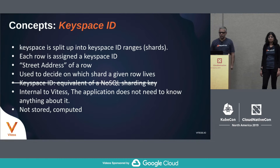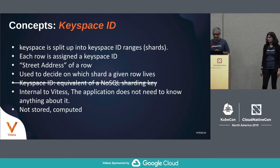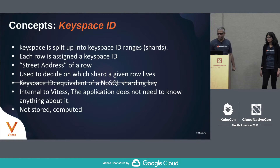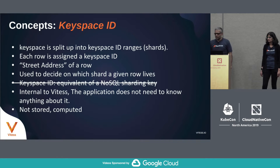A keyspace ID is what key-value stores typically use for sharding, but in Vitesse we never actually store a keyspace ID for every row. A keyspace is split up into keyspace ID ranges, which are shards. Each row is assigned a keyspace ID — the street address of a row — and using that, Vitesse figures out which shard a particular row should go into. It's internal to Vitesse, the application doesn't need to know about it, and it's computed, not stored. That gives us a lot of flexibility.